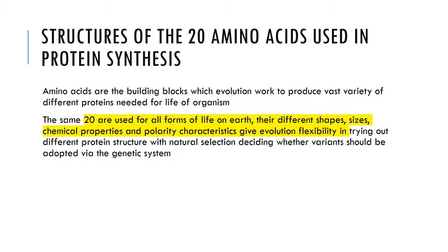The same 20 amino acids are used for all forms of life. The different shape, sizes, chemical properties, and polarity characteristics give evolution flexibility in trying out different protein structures with natural selection deciding whether variants could be adopted via the genetic system. Basically, to summarize, the same 20 amino acids are used in all different forms of life — for example, between a human and a dog — but it just has different polypeptide structures and different chains of amino acids which give it flexibility, hence giving it its properties.